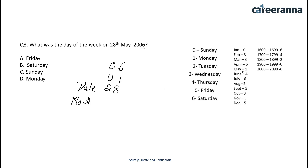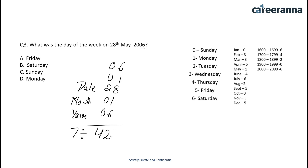For May we take the number 1. For the year 2006, since it falls between 2000 and 2099, we take the number 6. Now we add all these numbers: 28 plus 1 plus 1 plus 6 plus the quotient from 6÷4, and we get 42. We divide 42 by 7 and get remainder 0. According to the table, 0 corresponds to Sunday. So 28th May 2006 is a Sunday — option C is correct.